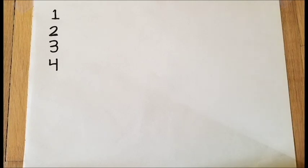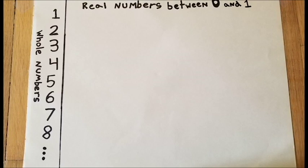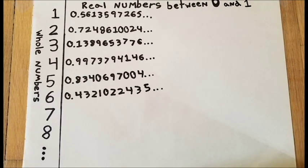We're going to list out all the whole numbers to infinity. Now we can pair each of these whole numbers with real numbers between zero and one. Since they're paired up, they have the same cardinality, meaning they're equal.